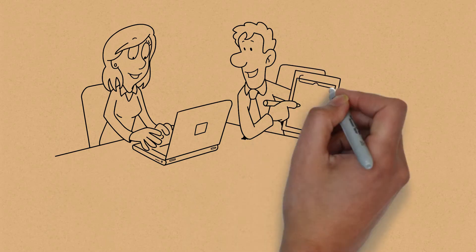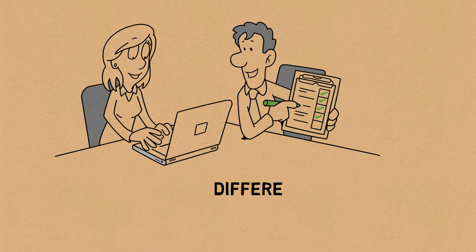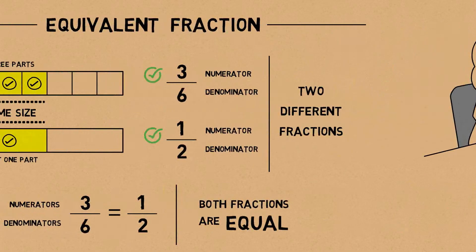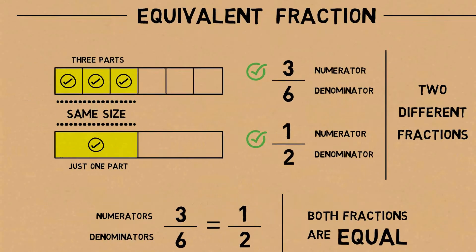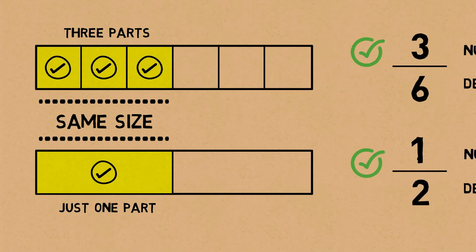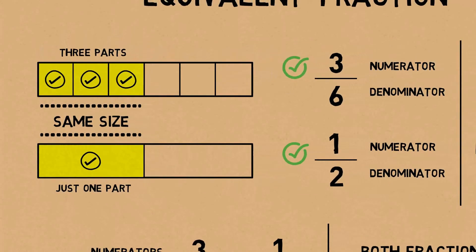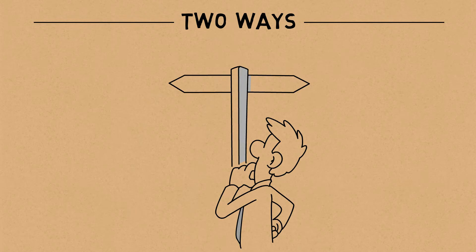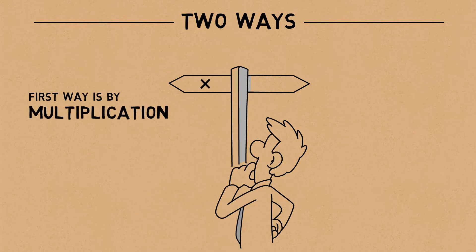There are different ways we can use to find equivalent fractions. Remember, the size doesn't change — only the denominator and numerator's digits change. There are two ways in which we can find equivalent fractions. The first way is by multiplication.